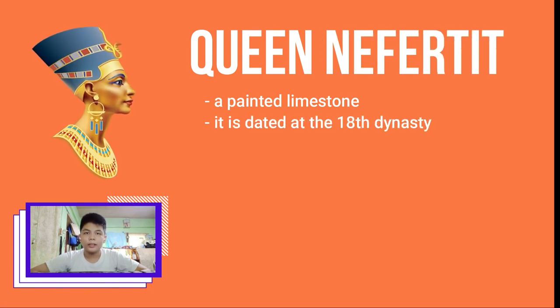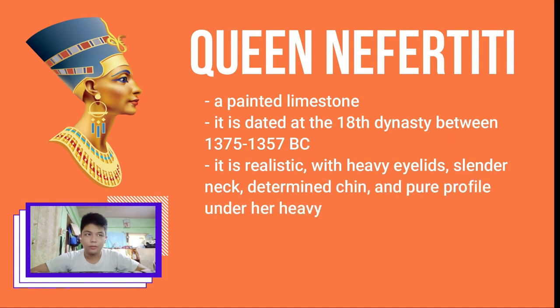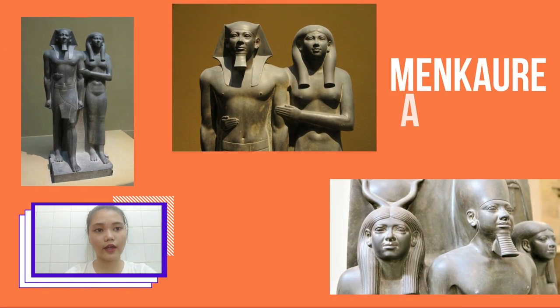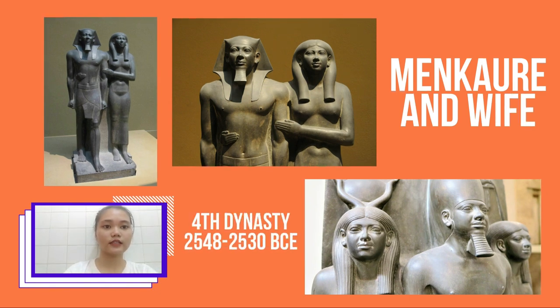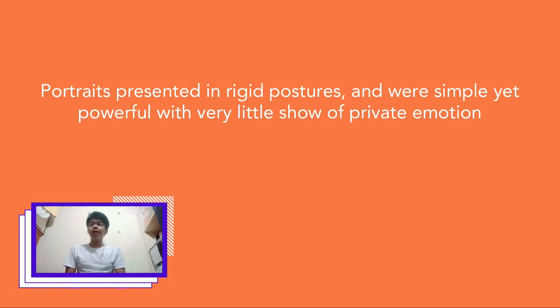The picture shows Queen Nefertiti, a painted limestone dated to the 18th Dynasty, between 1375 and 1357 BC. It is realistic, with heavy eyelids, a slender neck, a determined chin, and a pure profile under her heavy crown. Queen refers to the great royal wife of the Egyptian pharaoh. Another picture shows the pharaoh Menkaure and his queen in stone, dated to the 4th Dynasty, 2548 to 2530 BC — an example of portraits presented in rigid postures, simple and powerful with very little show of private emotion.